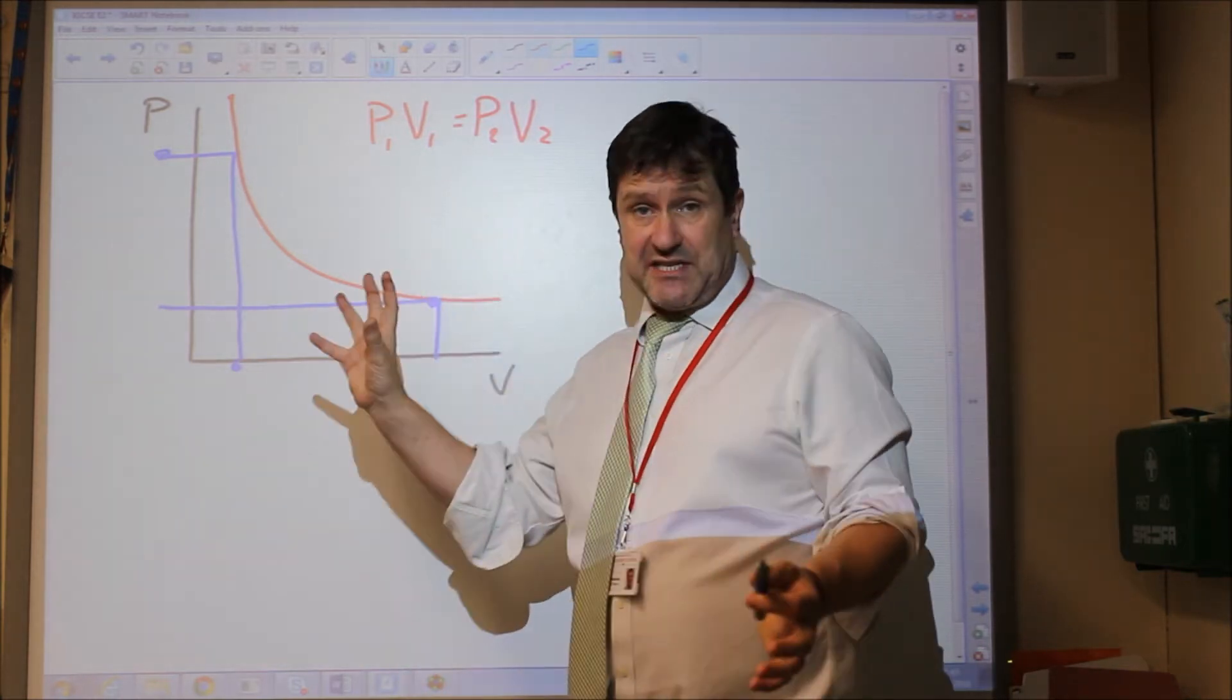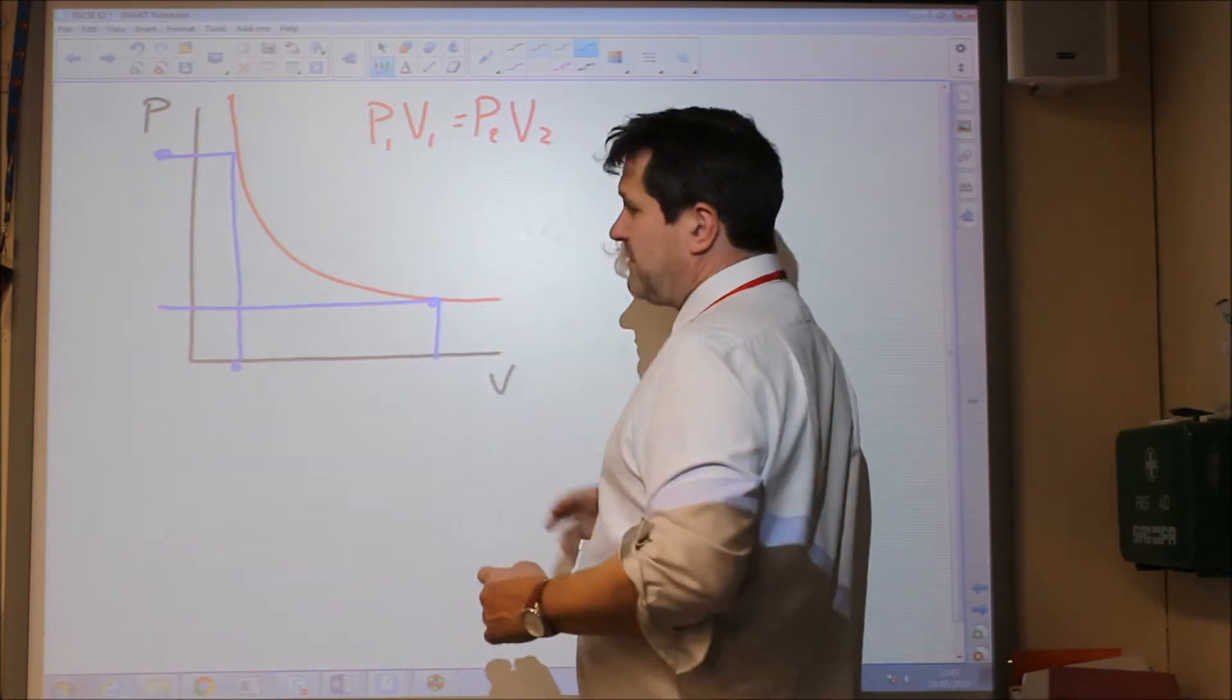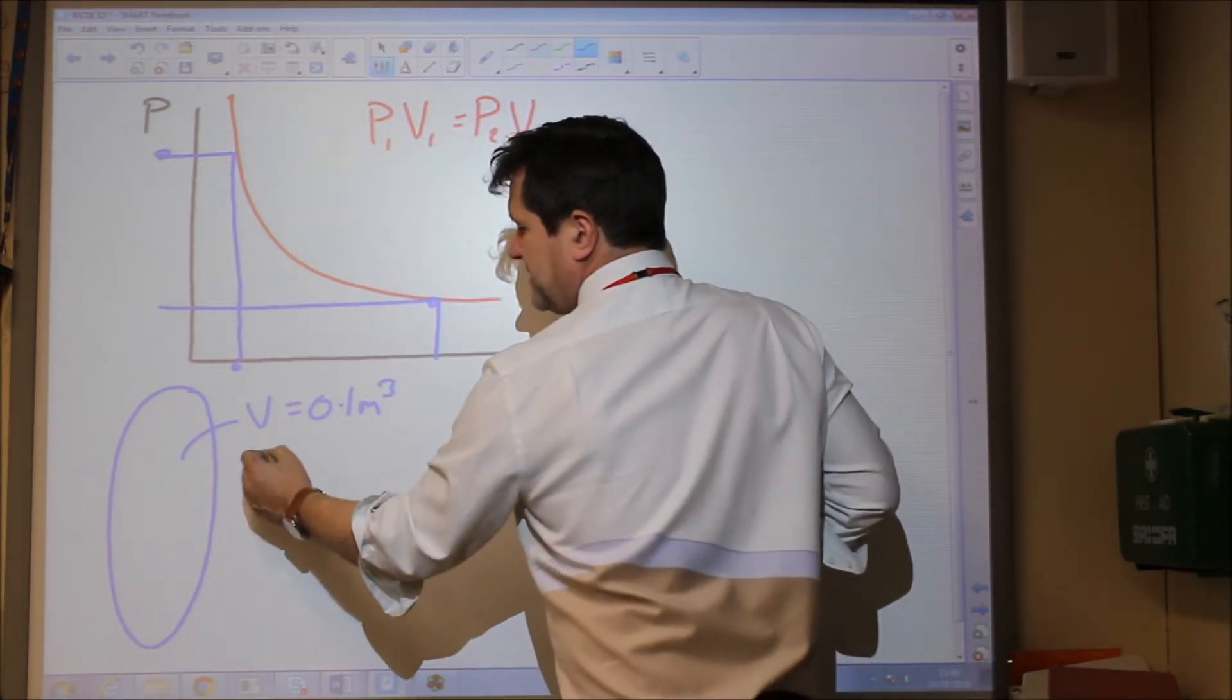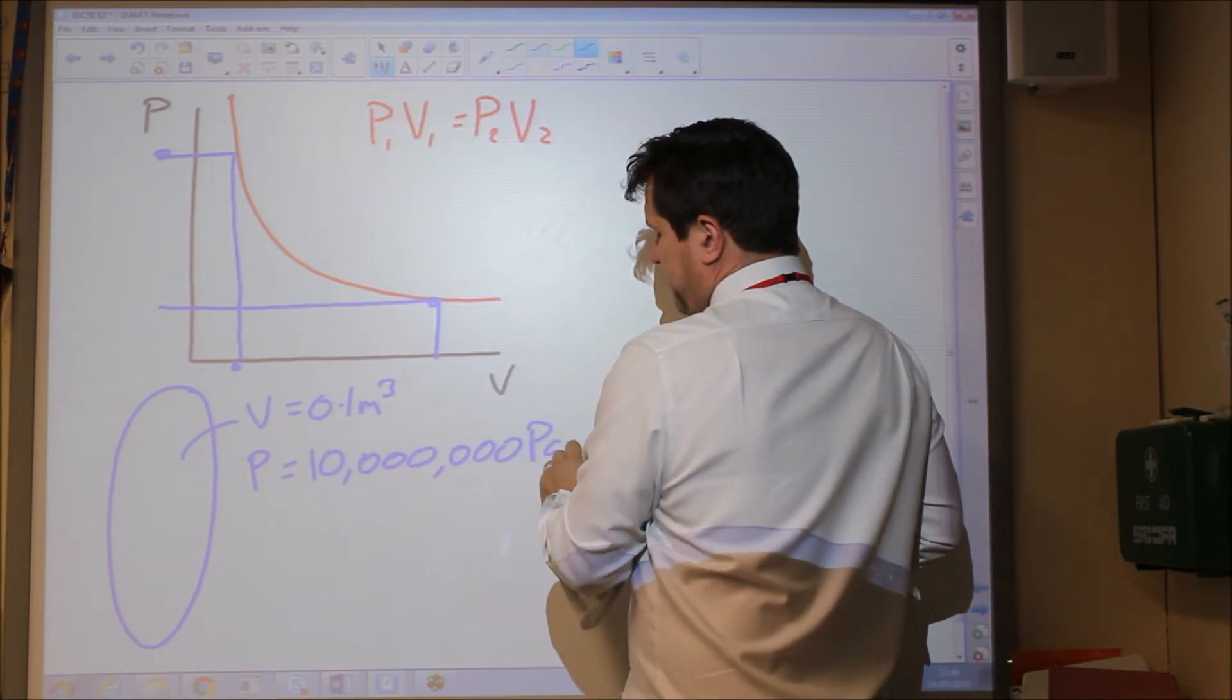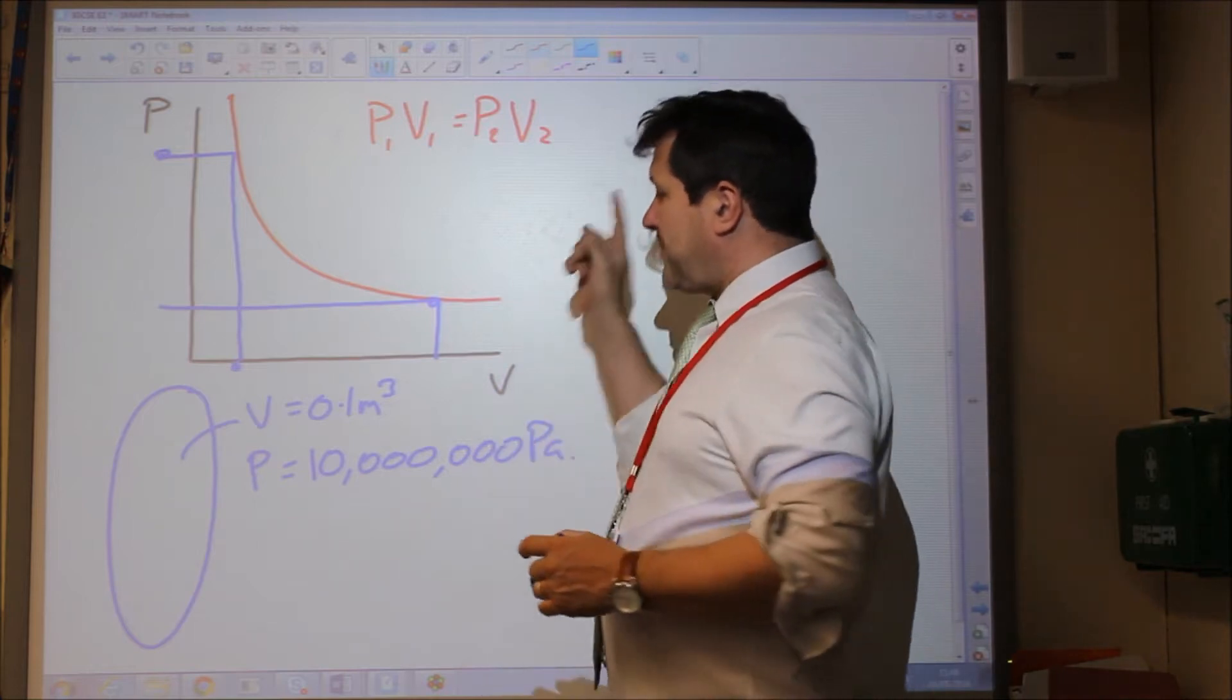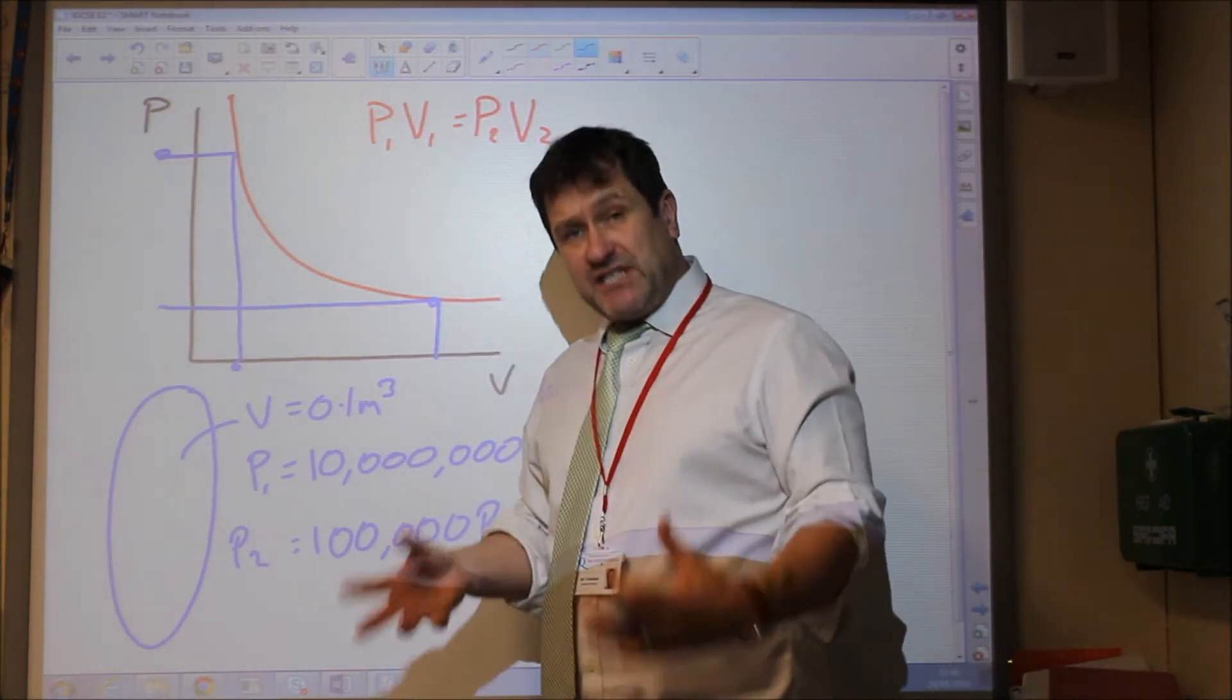So, simple examples. If you took a gas canister which expands to fill a room, the gas canister's volume is very small. Let's say we've got a gas canister with a volume of 0.1 metres cubed, just a tenth of a metre cubed. And the pressure inside it is, say, 10 million Pascals. When it's released and the gas, the CO2 gas, whatever gas it is, is released and allowed to occupy the room, if we say that the pressure of the room, P2, is 100,000 Pascals, we could then calculate what is the volume of CO2 in the room.